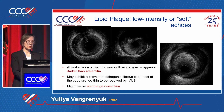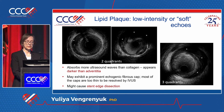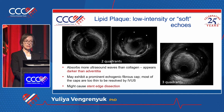Lipid plaque has very low intensity and low collagen content — it absorbs ultrasound waves and appears darker. In many cases we can visualize the fibrous cap overlying lipid, while in some cases we cannot, because IVUS doesn't have enough resolution to quantify fibrous cap thickness. It's very important to distinguish between lipid and fibrous plaque because lipid plaque at the stent edge might cause significant stent dissection.